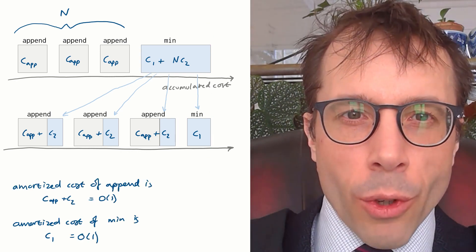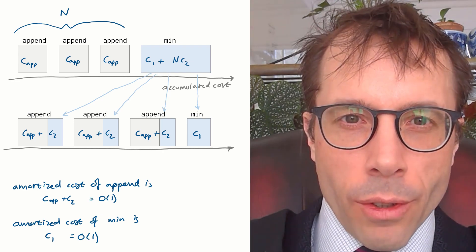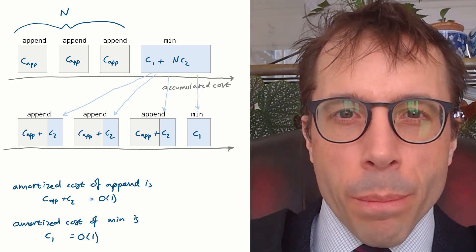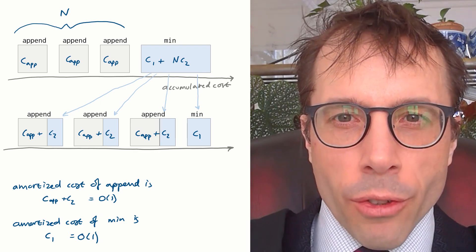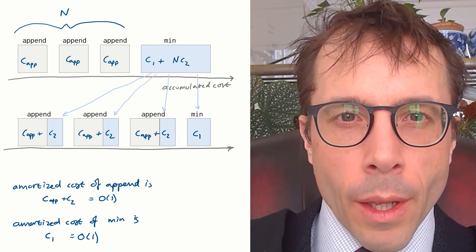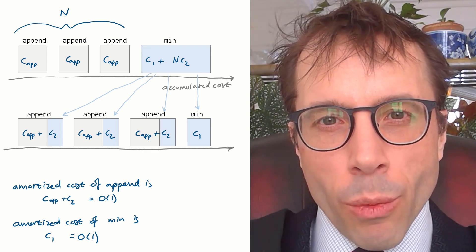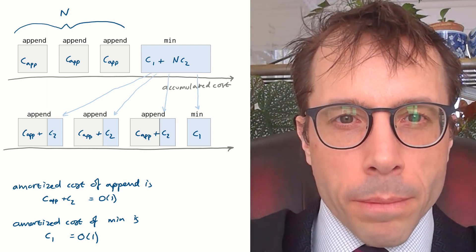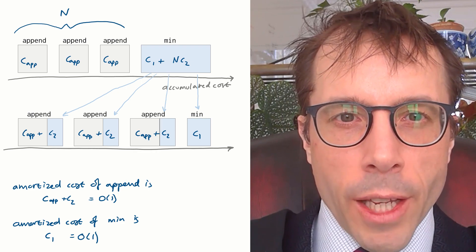In this picture, each of the append operations has amortized cost c_app plus c2, which is big O of 1, and min has amortized cost c1, which is again big O of 1. Neither of those two costs depends on n.